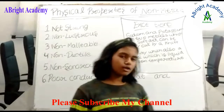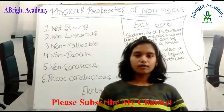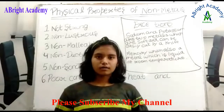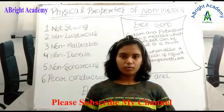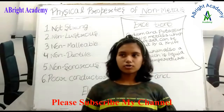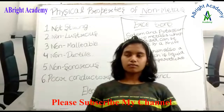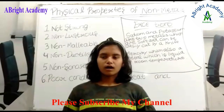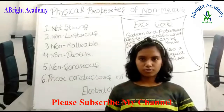Examples of non-metals are sulfur, carbon, coal, oxygen, phosphorus, and many more. And examples of metals are aluminum, iron, gold, silver, sodium, and potassium — though sodium and potassium are exceptions.